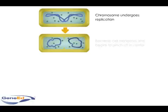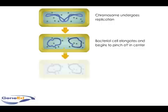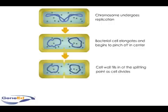Following this, the bacterium begins to elongate and pinch off in the center. The two chromosomes move to opposing sides of the cell, and the cell wall grows to fill in the pinched gap in the center.